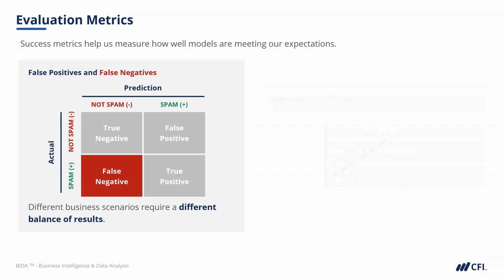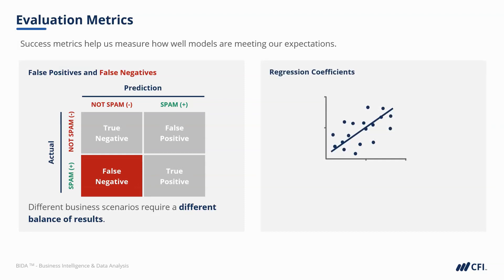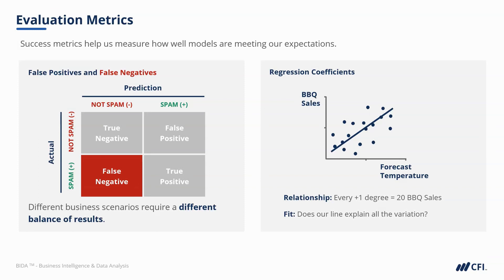On the regression side, when we're predicting how many of something we might expect, we're generally interested in two things: the relationship and the fit. Our relationship tells us that for every one degree of temperature, we're likely to sell an additional 20 barbecues. But our fit asks: does this relationship really explain all the variation in our data? Perhaps there are additional factors at play, like the weekday, that might impact the result. We'll explore some metrics later on that help us consider these questions.